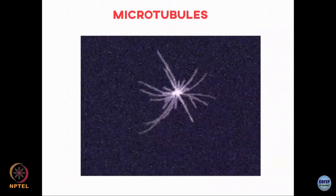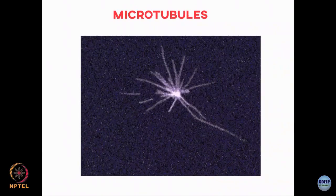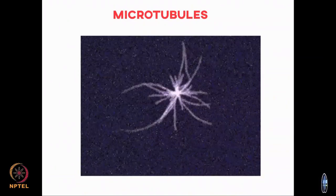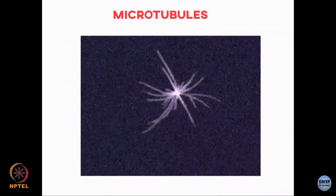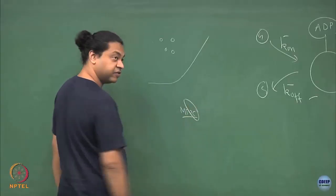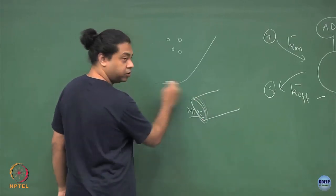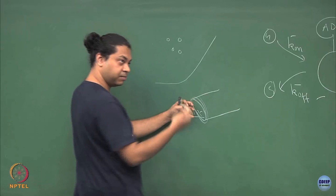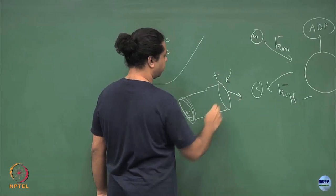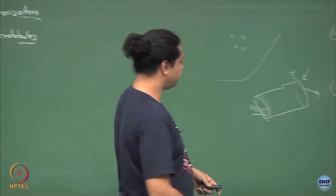For microtubules, you could polymerize them in vitro — if you left a solution of free tubulins and waited long enough, it would start to grow. But inside cells there is a structure called the microtubule organizing center in the interior of the cell, and microtubules nucleate from there. The minus ends are bound to this center and do not have much binding or unbinding. Most binding and unbinding happens at the plus end for microtubules, unlike actin where it happens from both ends.